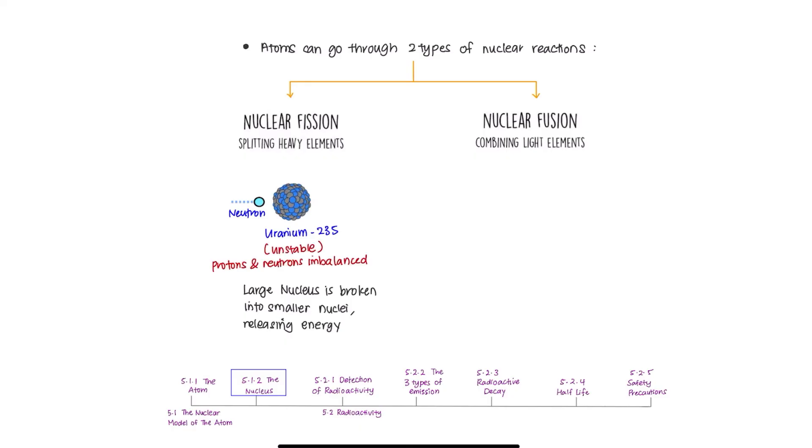Why? Because the number of protons and neutrons inside the nucleus is not balanced. So, this neutron only causes the uranium to become even more unstable.